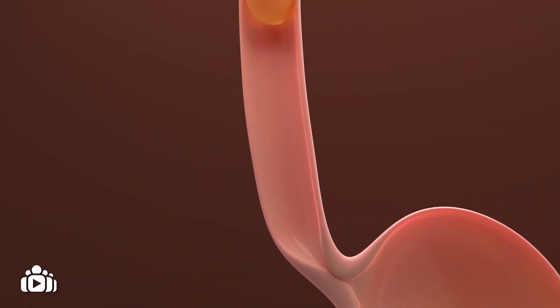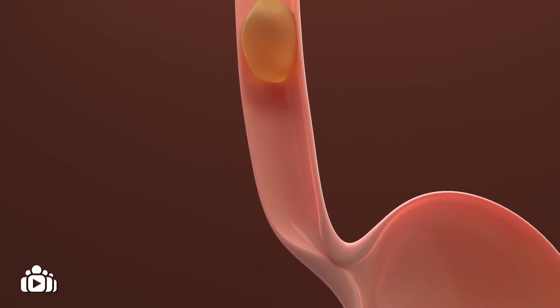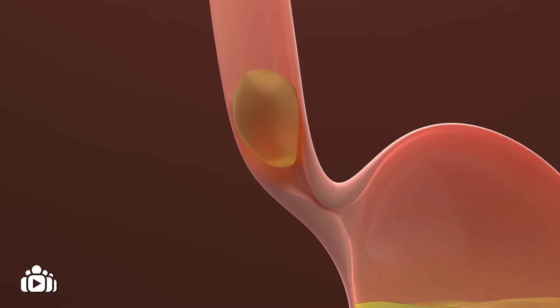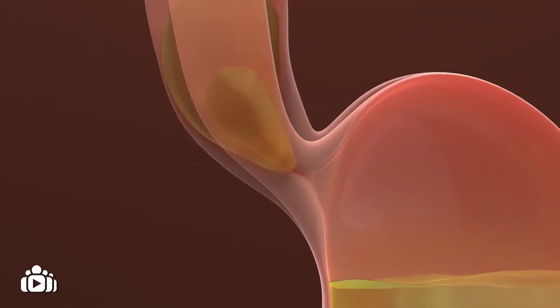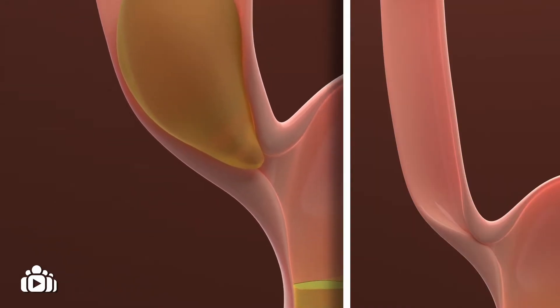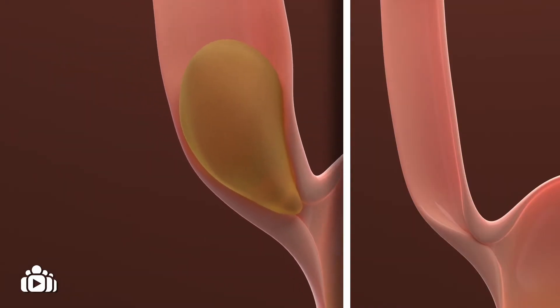In esophageal achalasia, peristalsis of the esophagus is progressively lost. The muscular valve does not relax properly and food builds up in the esophagus and passes into the stomach with difficulty. The esophagus may also enlarge over time.